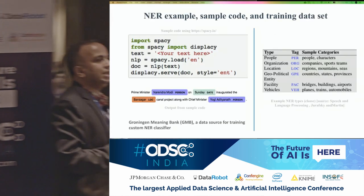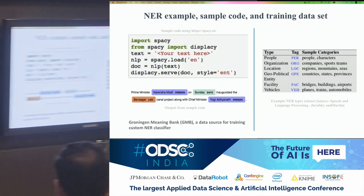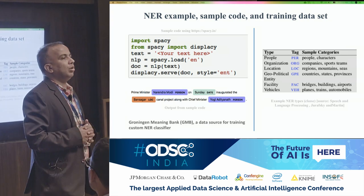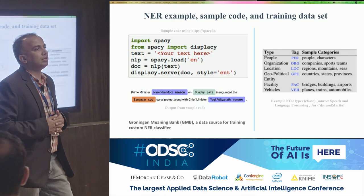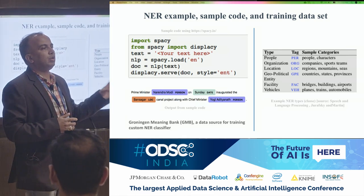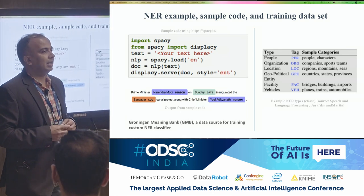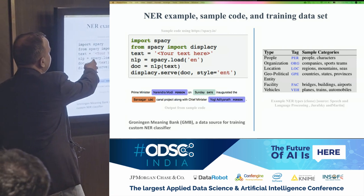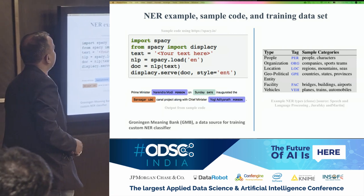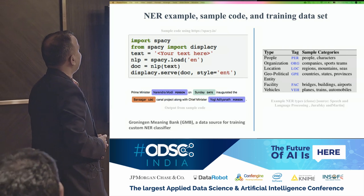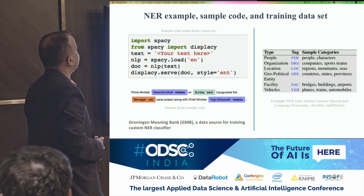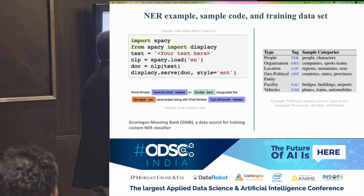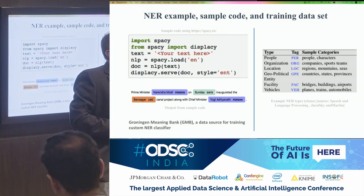Named entity recognition is a classification problem. Given the proper nouns in a sentence, the whole idea of named entity recognition is to classify them into classes. There are many classes that can be used — on the right you can see some typical ones: person, organization, location, geopolitical entity. Named entity recognition is becoming fairly commoditized in my opinion.